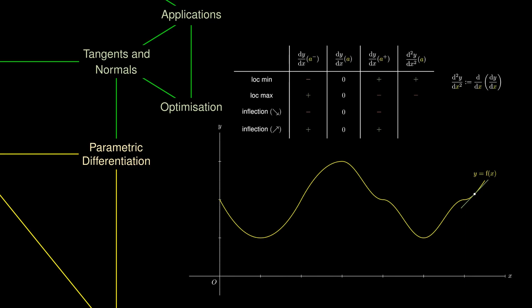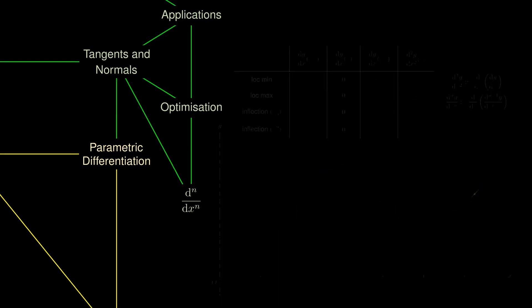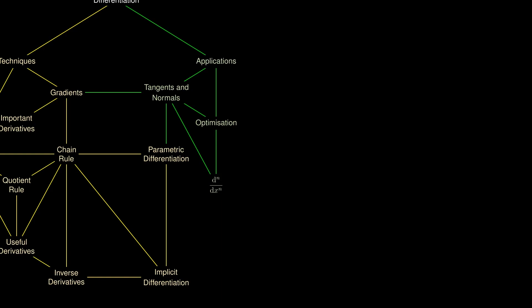If we can calculate the second derivative, differentiating one more time gives us the third derivative. In general, we can consider the nth derivative of a function, which is differentiating n times. This has geometric analogues to tangents and normals, and can be calculated through all our different means, including implicit differentiation.